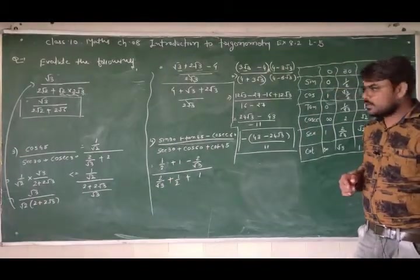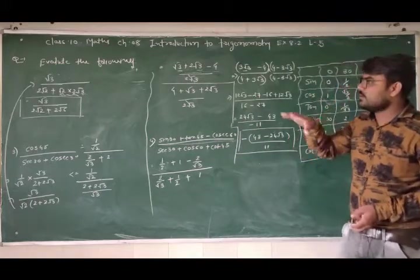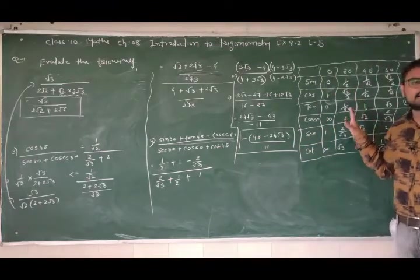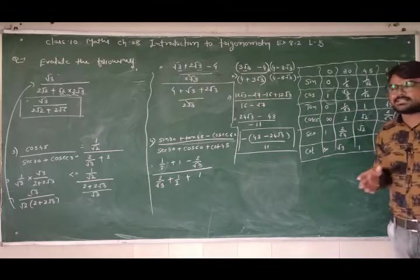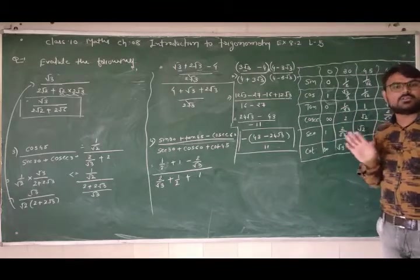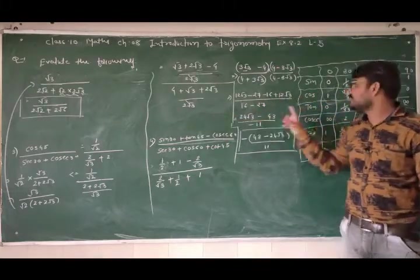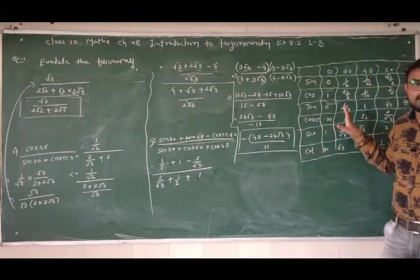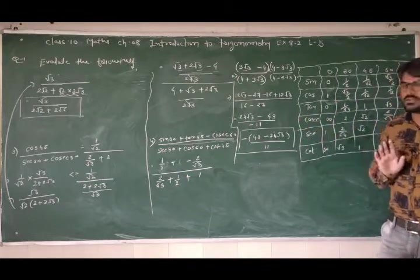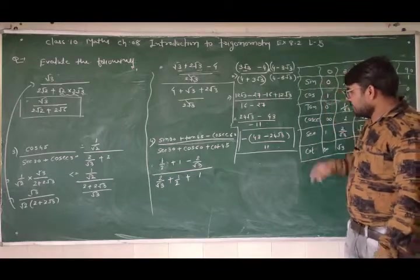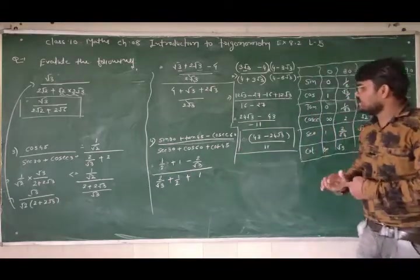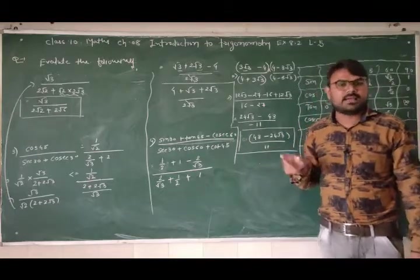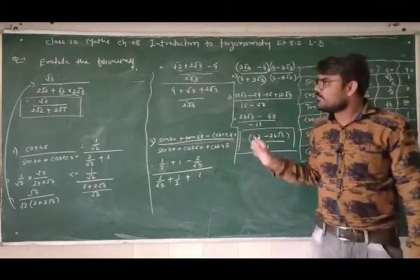Okay friends, यह थी पूरी कहानी — हमारी trigonometry: evaluate the trigonometric ratios. हमने 4 examples यहाँ पर किये — बहुत simple थे। इससे पहले आपको यह table याद रखना है — इसके लिए मैं एक video बनाऊँगा। कभी सारी shortcut tricks हैं यह table तैयार करने के। जहाँ भी आप trigonometry करते हो, बाजू में यह table होना चाहिए ताकि तुरंत उसमें से value देख के use कर सको। If you still have any questions, you can ask me or put your questions in our group. Thank you.